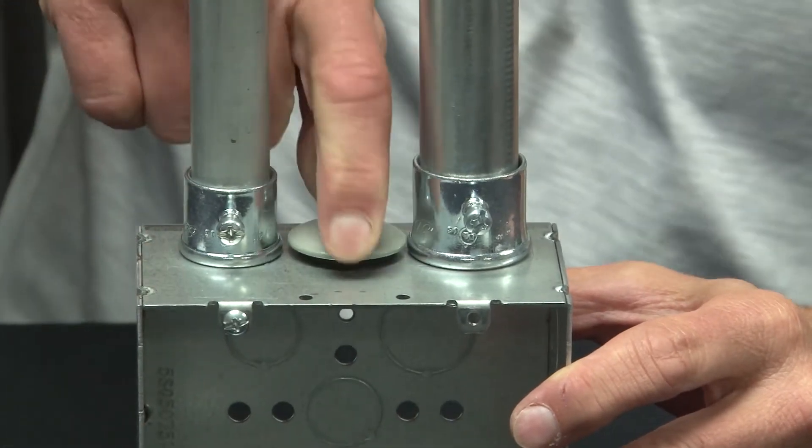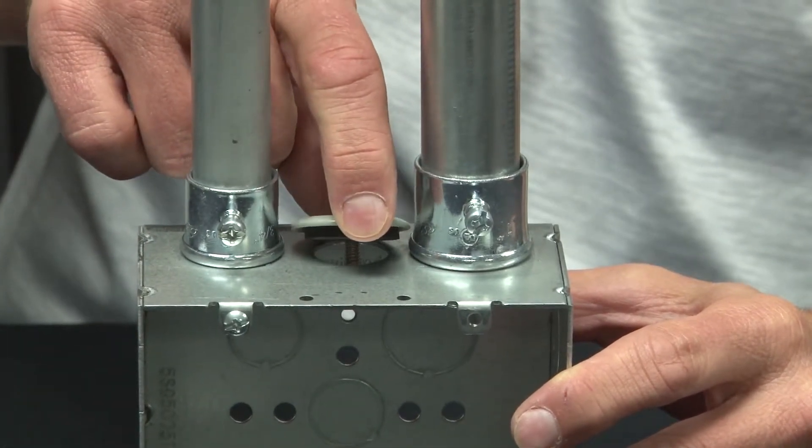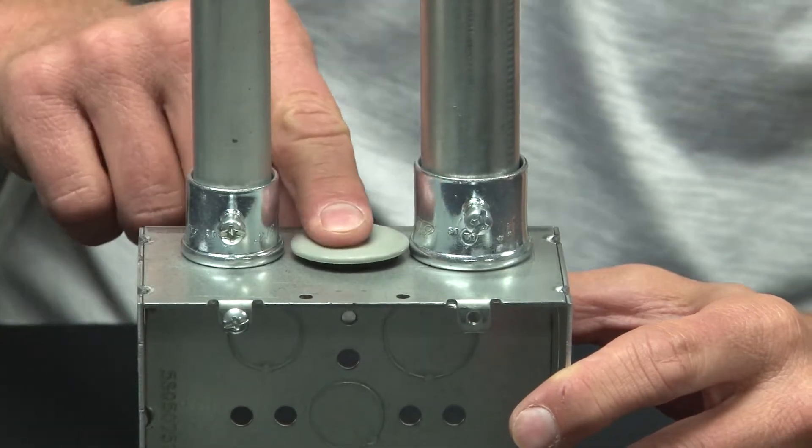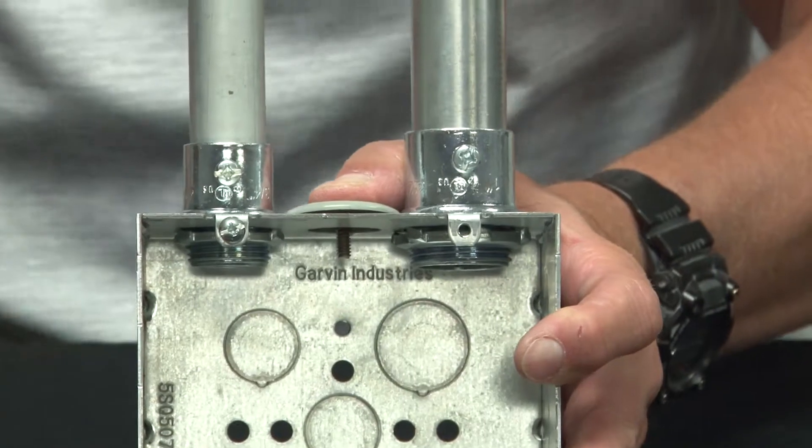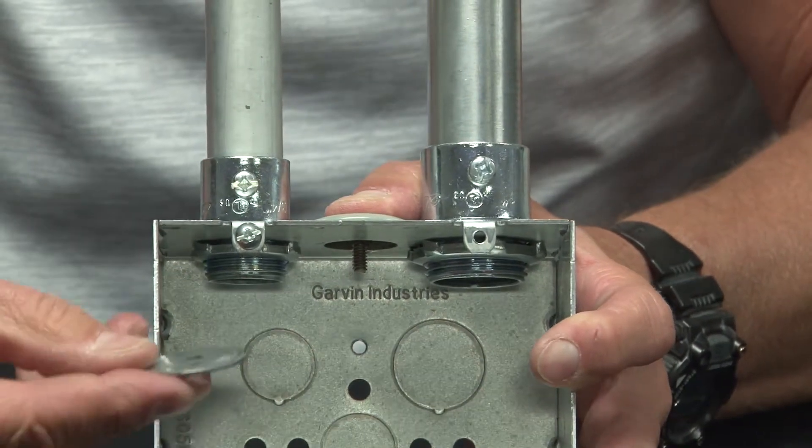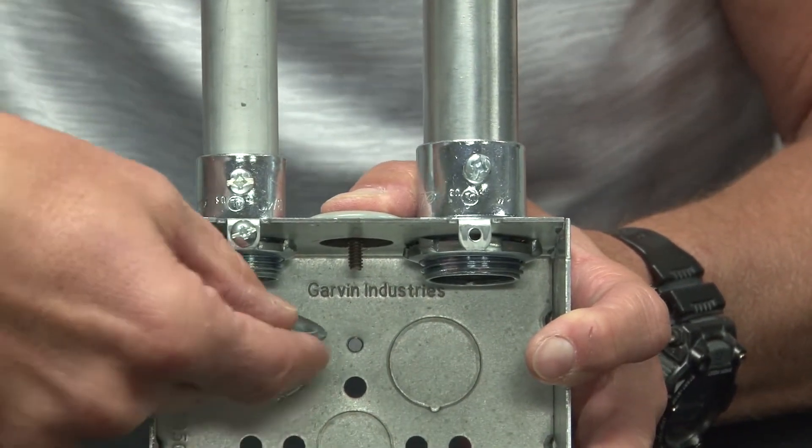the rubber gasket creates a seal between the steel surface and the elements outside. You then reach inside the enclosure or box, grab the backer bar, and put it in place.